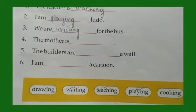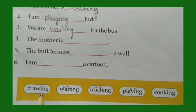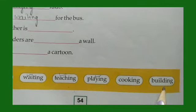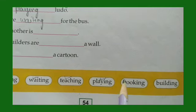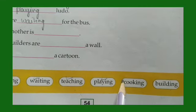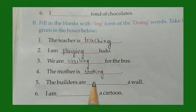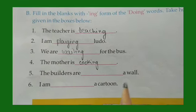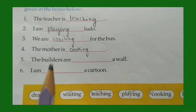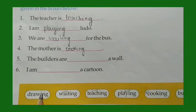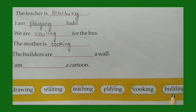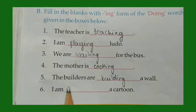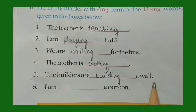Number four: The mother is dash. Drawing, cooking, or building? Cooking. The mother is cooking. Number five: The builders are dash a wall. What is the work of a builder? Drawing or building? Building. The builders are building a wall.